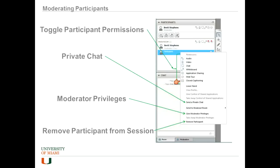There's also closed captioning, which is a bit more advanced. With closed captioning, you can have a student, moderator, or TA type captions of what you're saying for a student who may be hearing disabled. You can also choose to lower someone's hand — if someone raises their hand, you can click 'lower hand' once you've addressed them or if now isn't a good time.